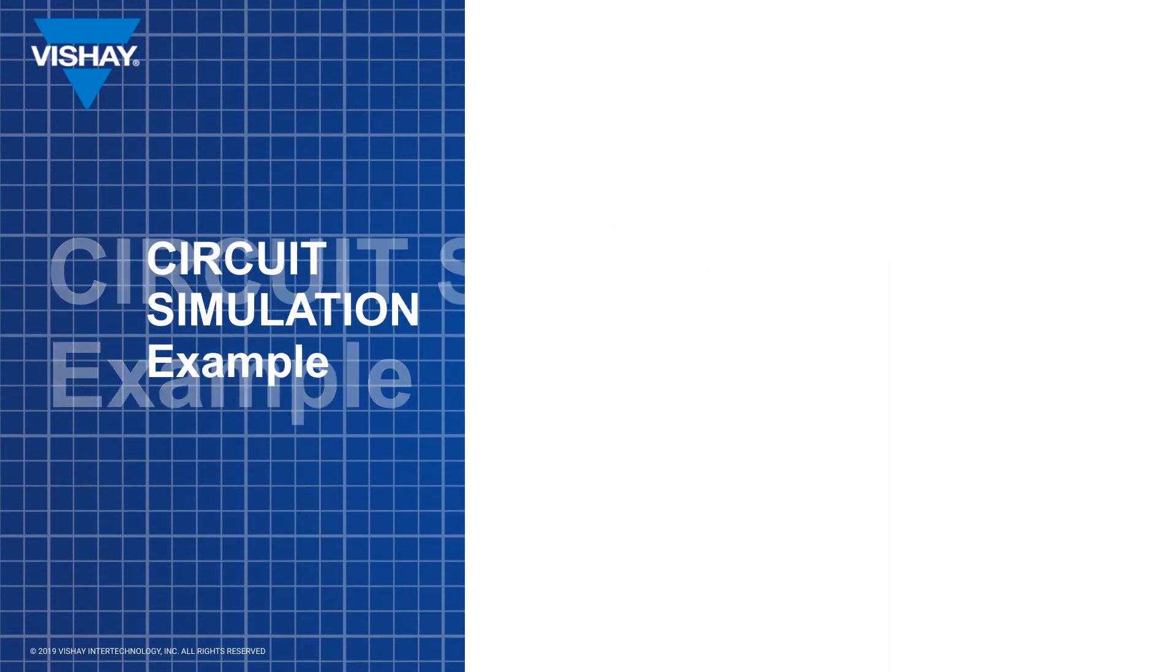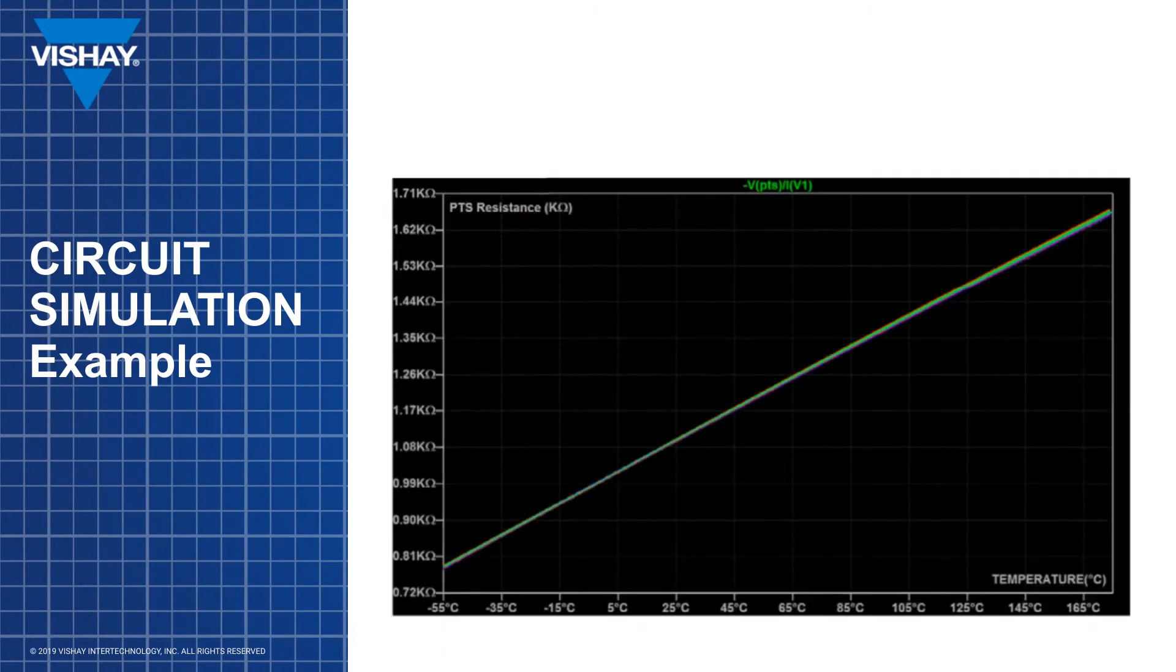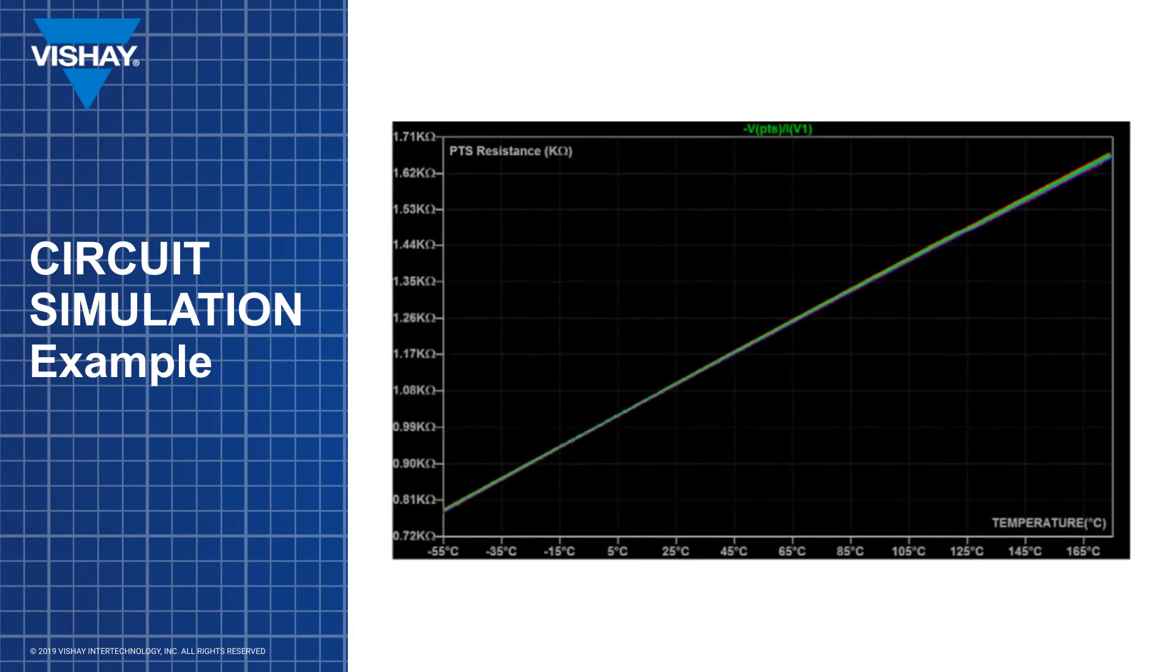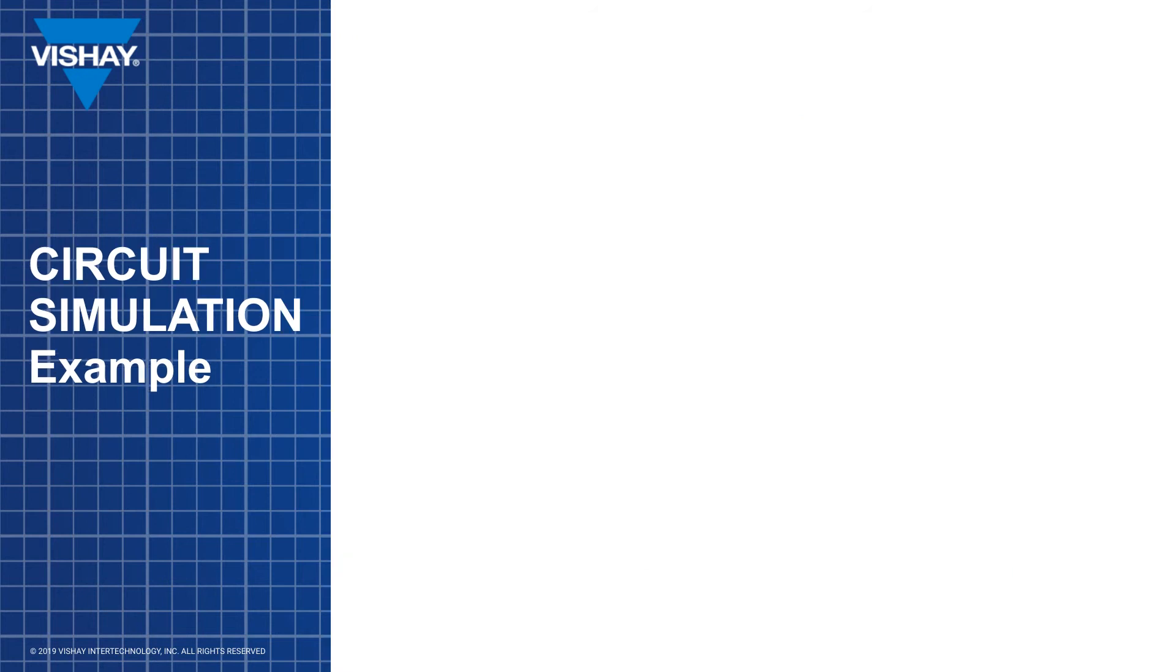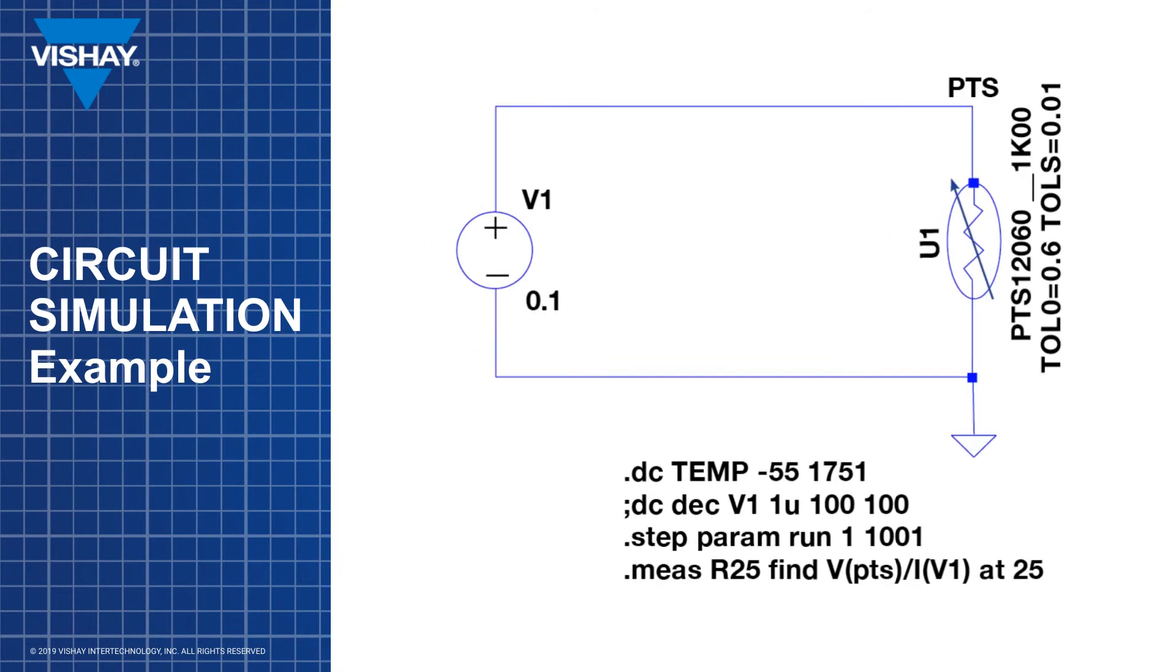A more detailed example is shown by connecting a 1K ohm PTS-AT 1206 to a plus 0.1 volt voltage source. This simulation is run 100 times and represents the resistance as a function of temperature, letting the electrical parameters randomly cover their tolerances. The tolerances are defined by TOL0, temperature tolerance at 0 degrees C, in this case 0.6 degrees C, and TOLS, tolerance on the slope, in this case 0.1 degrees C per degree C.